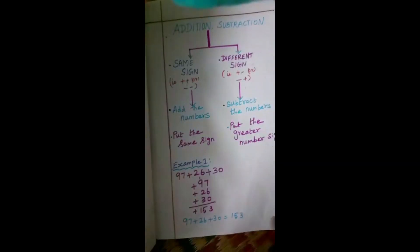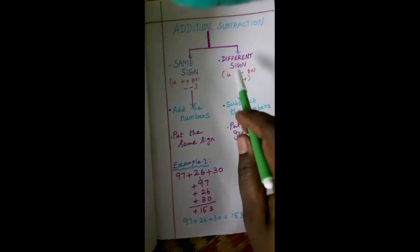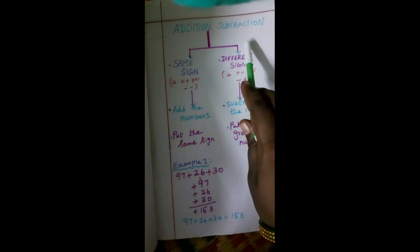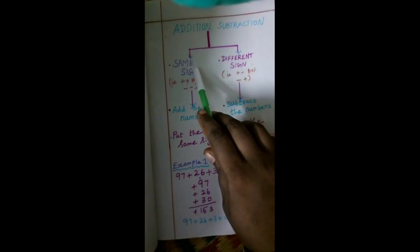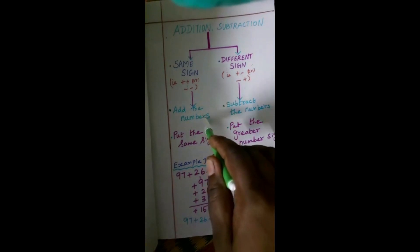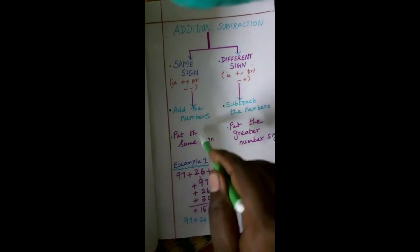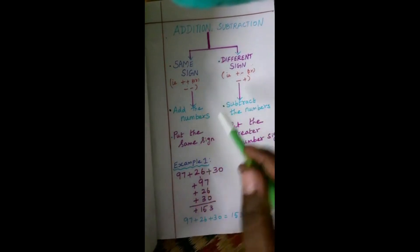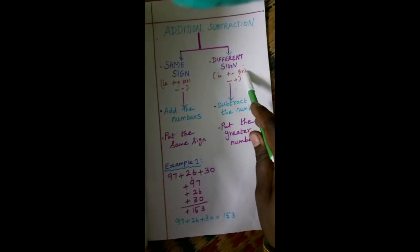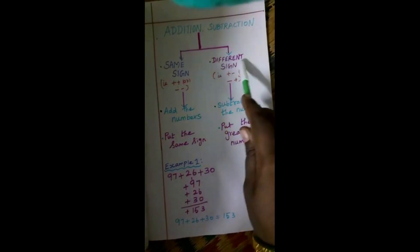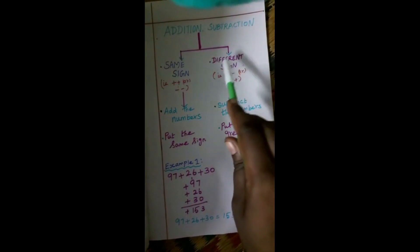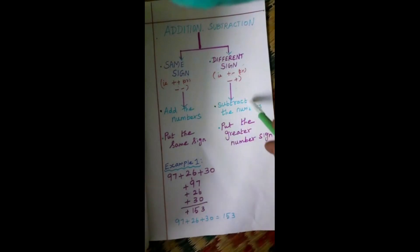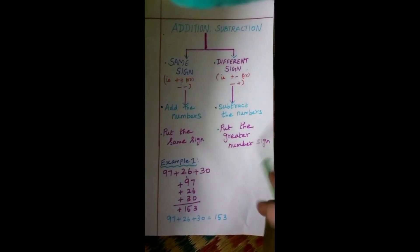So to summarize for the same-sign case: whatever sum is given in addition and subtraction, first we check if the sign is the same, then we add the numbers and put that same sign. Next, we move on to the second case: different sign. Suppose the sum contains a different sign — first we subtract the numbers and put the sign of the greater number.